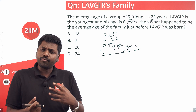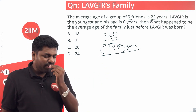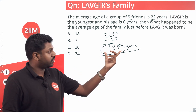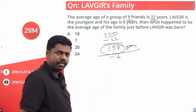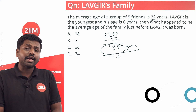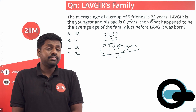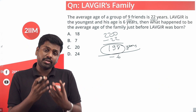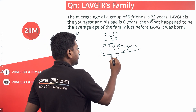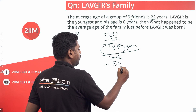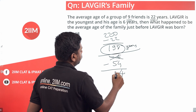We want to know what happened just before Lovegear was born. Lovegear is six years old now, so we travel six years back. Lovegear was not there, so his six years are removed. The other eight members were also each six years younger, so we subtract 9 times 6, which is 54, from 198.